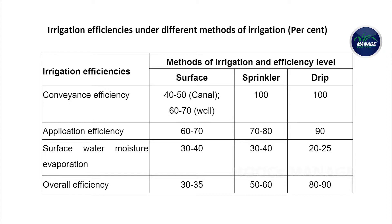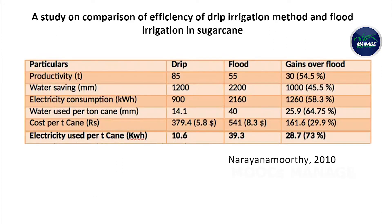Age-old irrigation methods like flooding have proved to be very less efficient in water utilization, both in terms of conveyance efficiency and water use efficiency. The improved methods like sprinkler and drip irrigation are found to be superior to the flooding method. Drip irrigation with an efficiency of more than 80 to 90 percent proves to be a better option. A study on sugarcane comparing drip with flood irrigation proved that drip irrigation is quite superior in terms of crop productivity as well as savings on electricity.